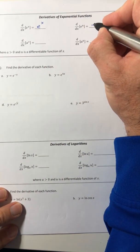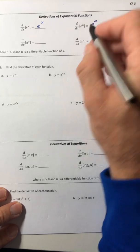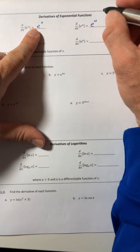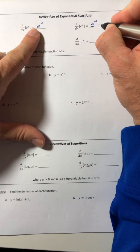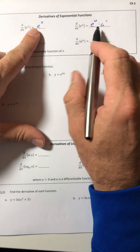What you can do is just rewrite the function, so just e to the u, just like you did here, but then you're gonna multiply by the u prime or the derivative of your exponent.